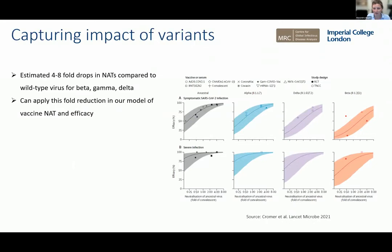Further work by Deborah Cromer and her team has extended this model to show how it can capture the impact of new variants. They've used this to show how estimated fold drops in antibody titer — fold drops of between four and eight — look at how neutralizing antibody titer is reduced for the alpha, beta, gamma, and delta variants relative to wild type. We can apply this fold reduction in our model of antibody titer and efficacy and then apply a fold drop to represent the reduced impact of vaccines against the Omicron variant.